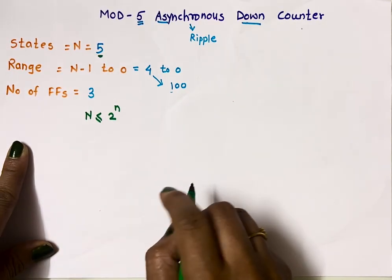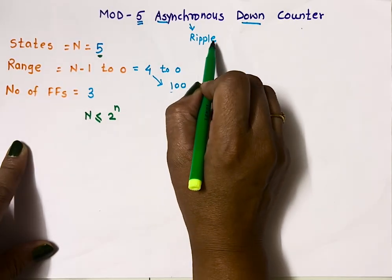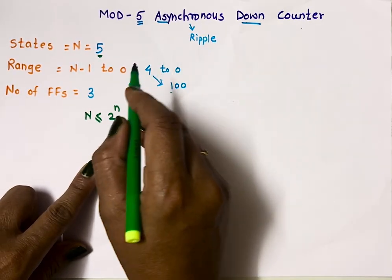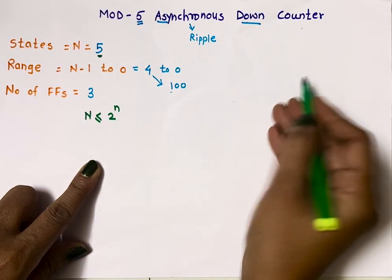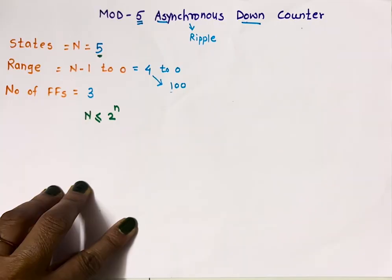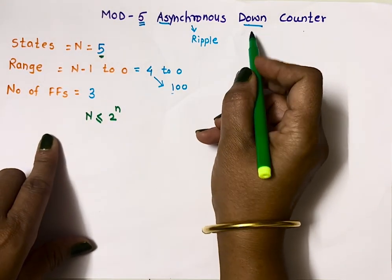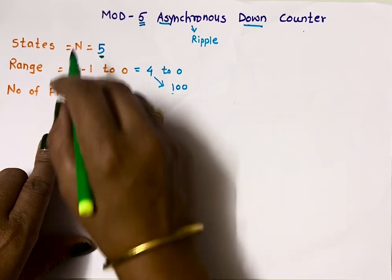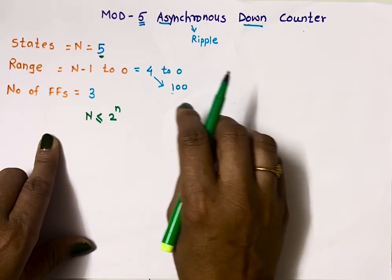The basic difference between an up counter and a down counter in ripple counters: in an up counter, the Q output of the first flip-flop acts as the clock input to the second, whereas in a down counter, the Q-bar output of the first flip-flop acts as the clock input to the second.